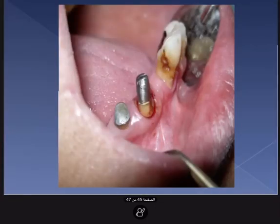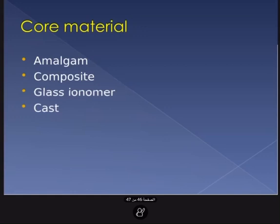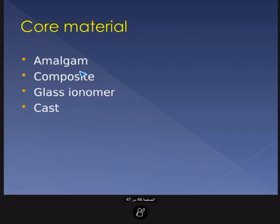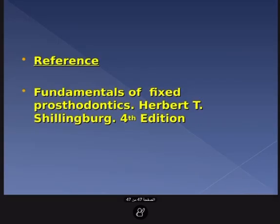In summary, for core materials you can use amalgam, composite resin, or glass ionomer. If it is a custom cast system, it is cast metal. In our college, we commonly use the composite system for patients because it is easy — you cure it immediately and then start crown preparation right away. You can also use glass ionomer, but you must do the restoration one day and call the patient back the next day once it has set. Any questions?